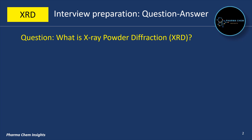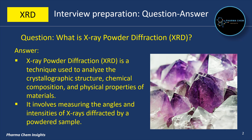First question: what is X-ray powder diffraction XRD? X-ray powder diffraction XRD is a technique used to analyze the crystallographic structure, chemical composition and physical properties of materials. It involves measuring the angles and intensities of X-rays diffracted by a powdered sample.